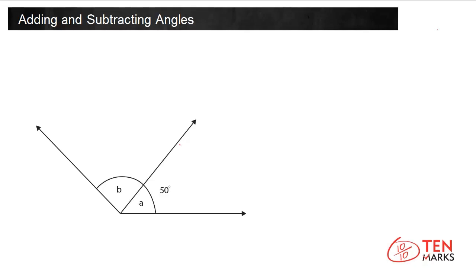Take a look at this figure. The two angles in the figure add up to 120 degrees. What is the measure of angle B? So let's label this bigger angle 120 degrees. We can see that angle A equals 50 degrees, so we want to find the measure of angle B.